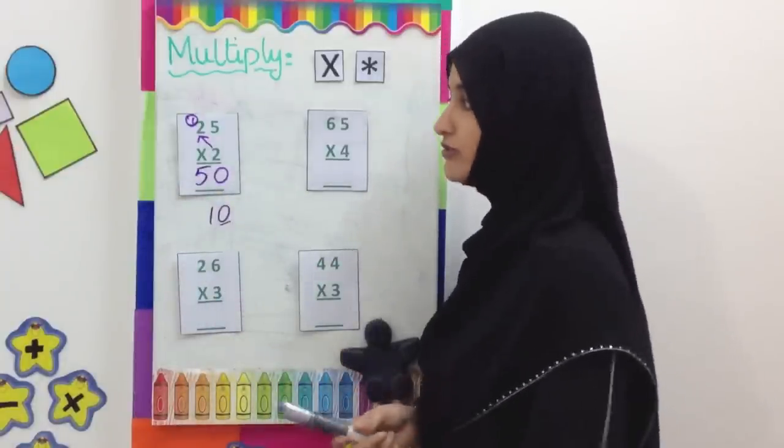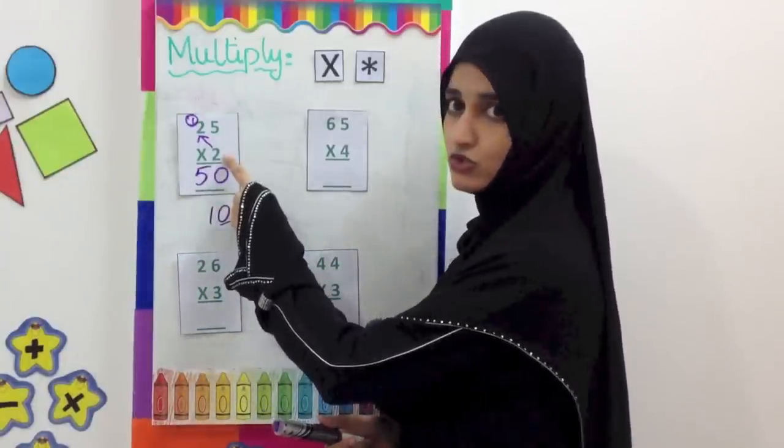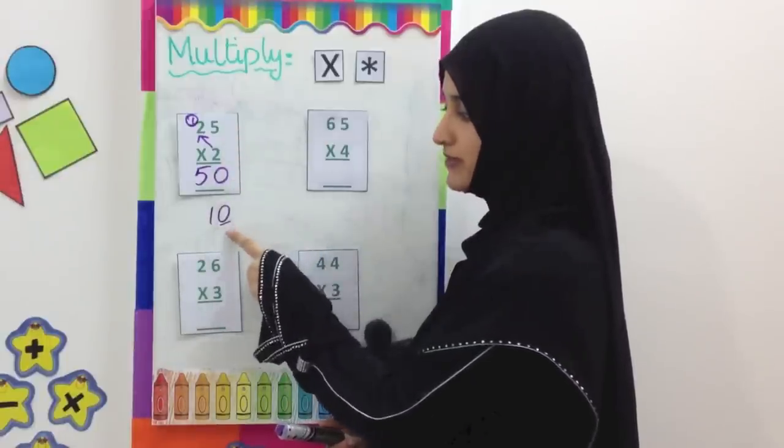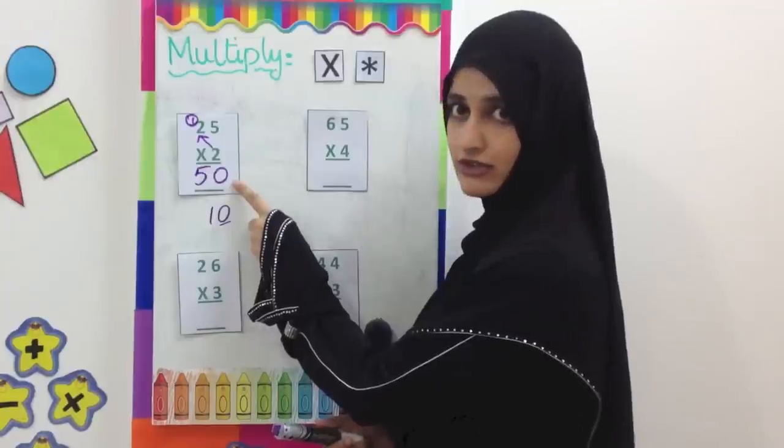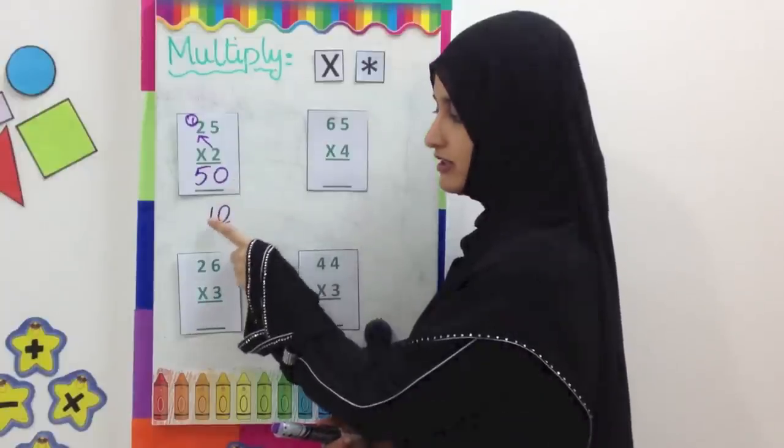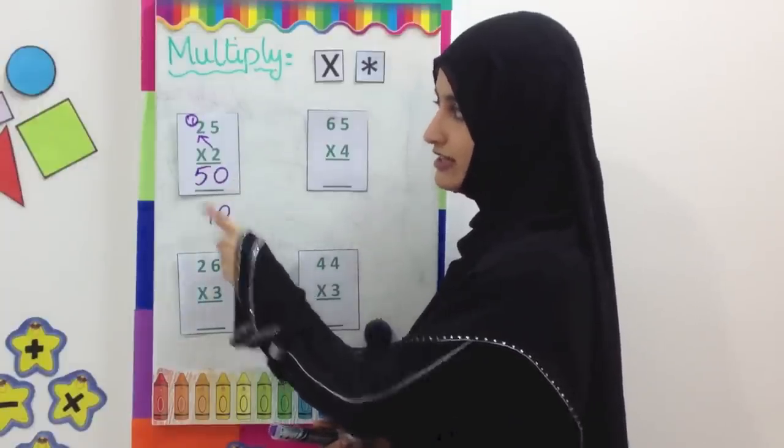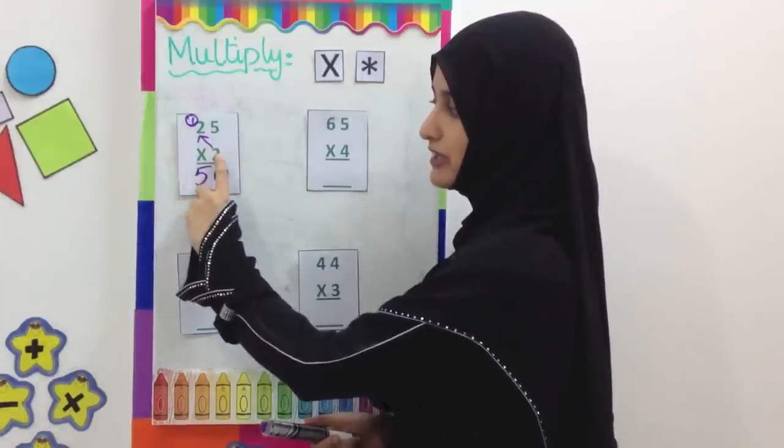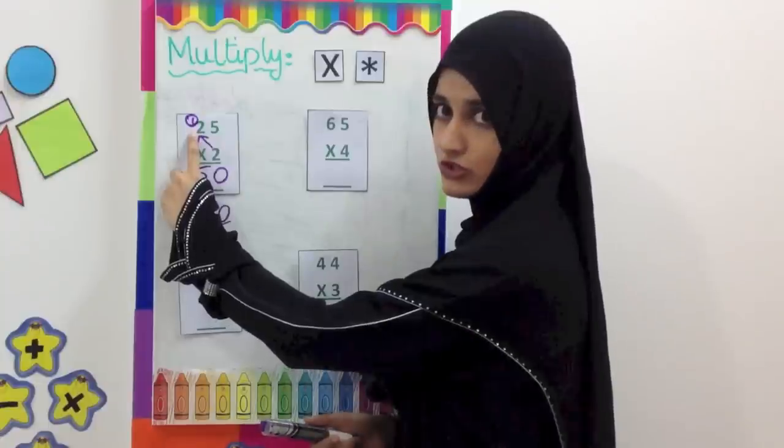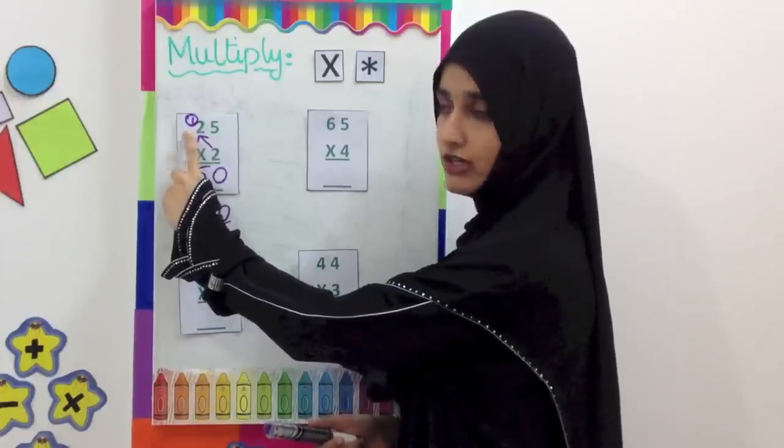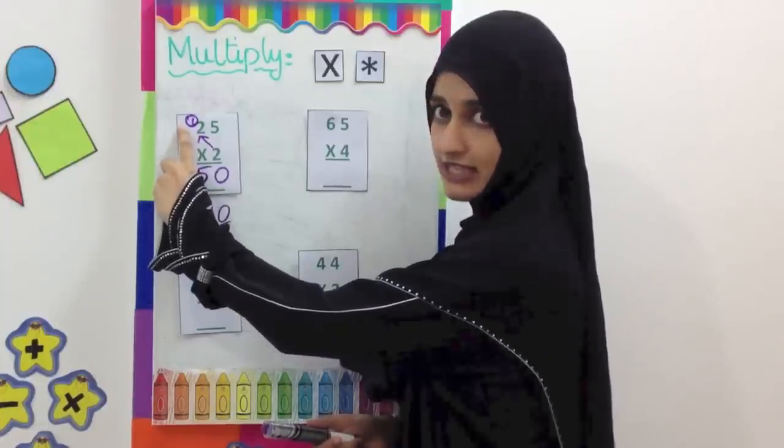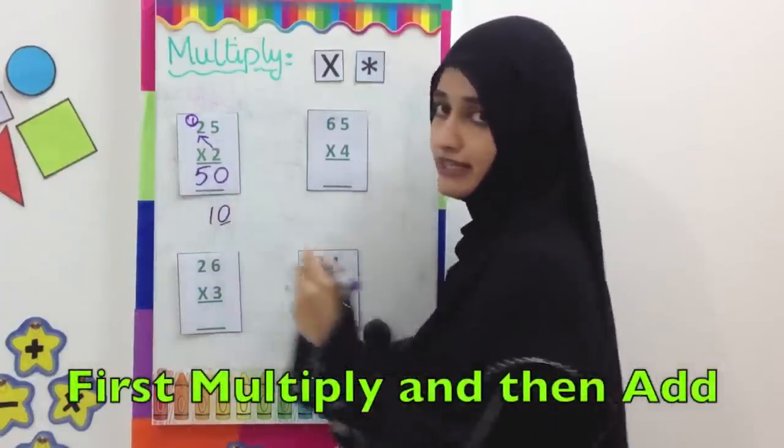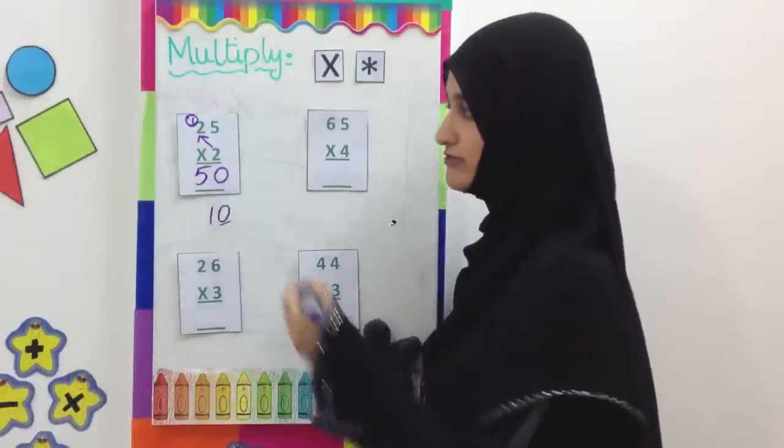What we did was, first of all we multiplied the 2 with the 5. The answer was 10. The 0 goes down here in the units place. This 10 is carried on this side. Now we are going to multiply 2 with 2. 2 2's are 4. We see this 10 here. We are going to add that. So what we are doing here is, we are going to first multiply and then add. The answer is 50.